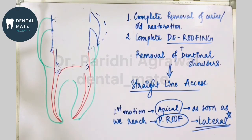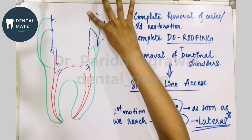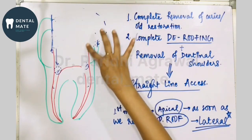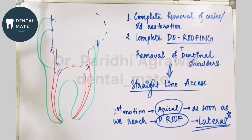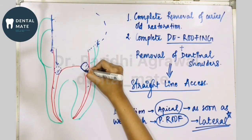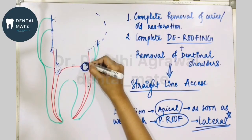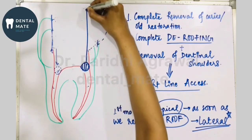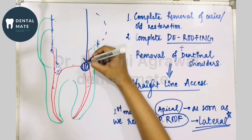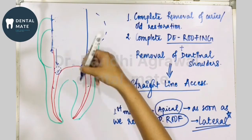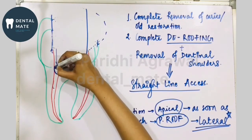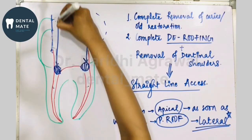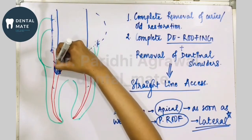With the lateral cutting motion, there must always be a straight-line access to the orifice. This is the orifice, and there is a straight-line access, meaning whatever instrument is used will go straight to the orifice.